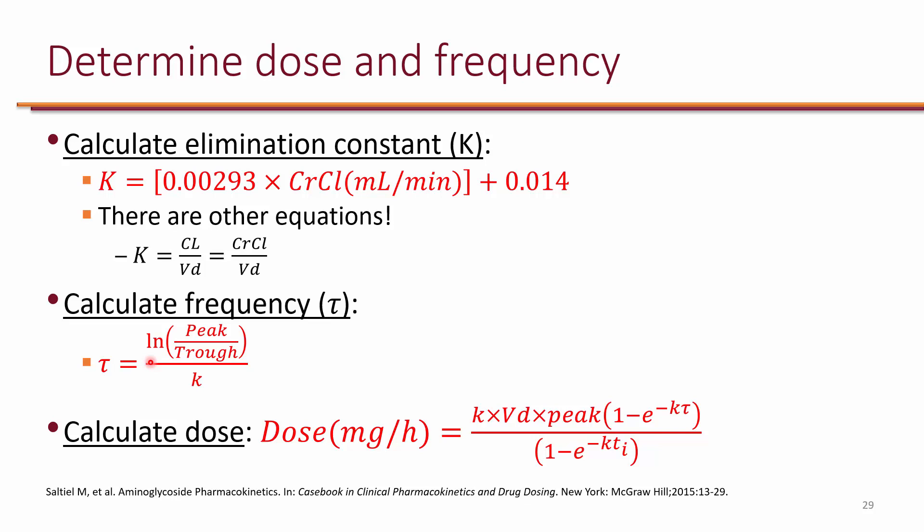Frequency should be every 24 hours, every 12 hours, every 8 hours, or every 6 hours — standardized intervals. You don't want something like every 5 or every 7 hours, as that makes the schedule hard to follow and difficult for nurses to administer. So if you get a tau of 5, for example, you round it to the closest standard frequency, which would be 6.